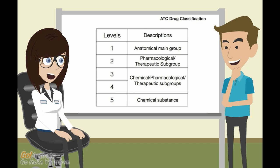Drugs are classified in five different levels. In the first level, drugs are divided into 14 main groups. The second level deals with pharmacological and therapeutic subgroups.